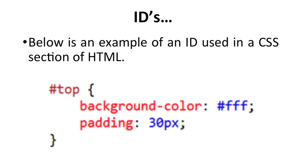Here is an example of an ID used in a CSS section of HTML: '#top' with background-color set to #fff and padding with a value of 30 pixels. This illustrates how IDs are declared in the CSS section.